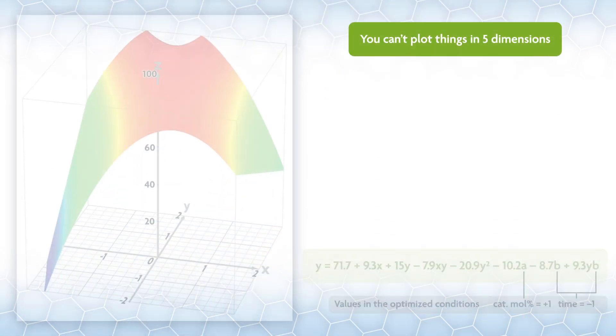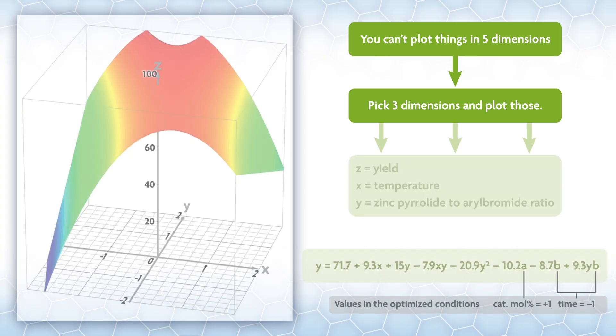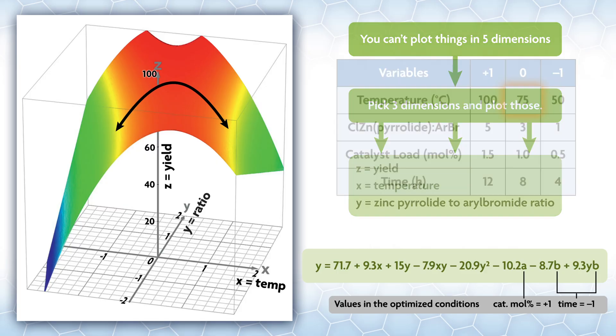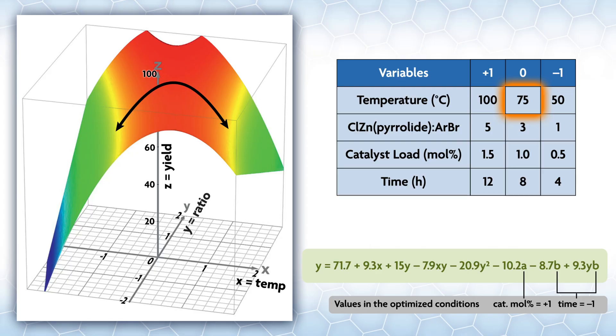You can't plot things in five dimensions, but you can pick three dimensions and plot those. Here's a plot of the surface related to the model, where the z is equal to yield, x is equal to temperature, and y is equal to the zinc pyrolide to aerobromide ratio. Here the axes are extended to plus 2 and minus 2, so you can see what would happen if you look just outside the model range. You can see the red ridge almost lined up with the y-axis. The ridge rises slightly as you increase the ratio. In the x temperature direction, it drops off rapidly if you get too hot or too cold. The temperature sits on the ridge at about zero, so we put our reaction temperature at 75 degrees C.